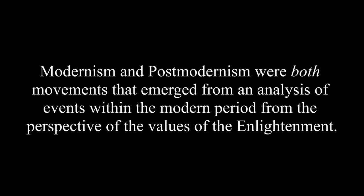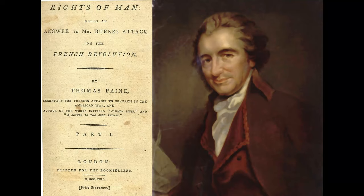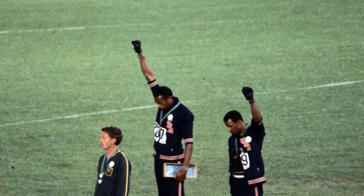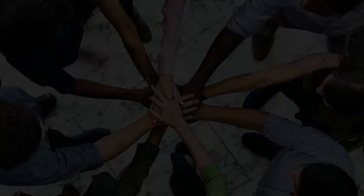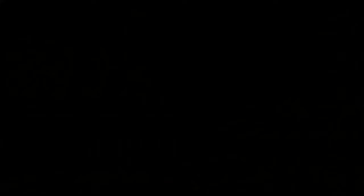Conclusion. Modernism and post-modernism were both movements that emerged from an analysis of events within the modern period from the perspective of the values of the Enlightenment. But whereas modernism offered a qualified endorsement of Enlightenment ideals, post-modernism was an unequivocal denunciation of them. Modernism developed into an ideology of a unified world and a unified humanity with a shared vision and shared goals. Post-modernism, on the other hand, was a counter-movement to modernism; post-modernists argued that humankind may never reach its goal of a unified humanity.